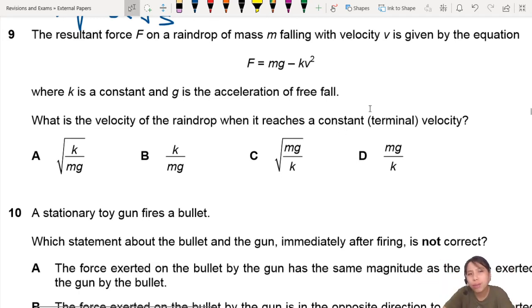Where did this equation come from? In case you don't know, I'll just give you a quick revision for that. When an object is falling, what are the forces acting on it? It has weight, which is mg.